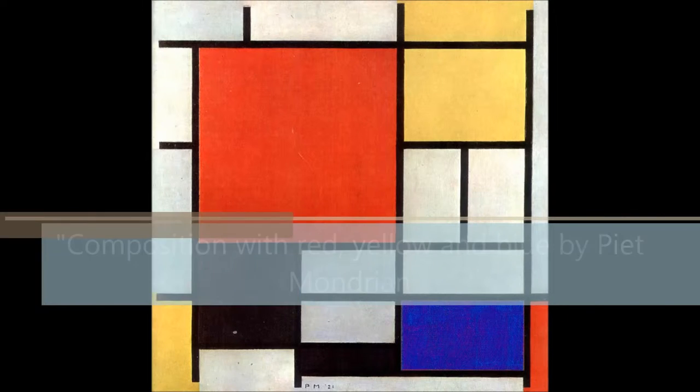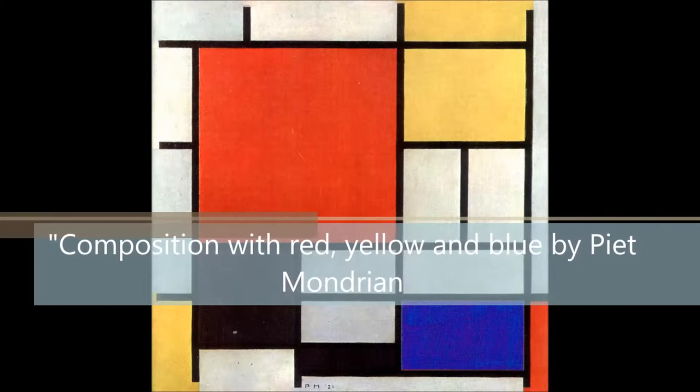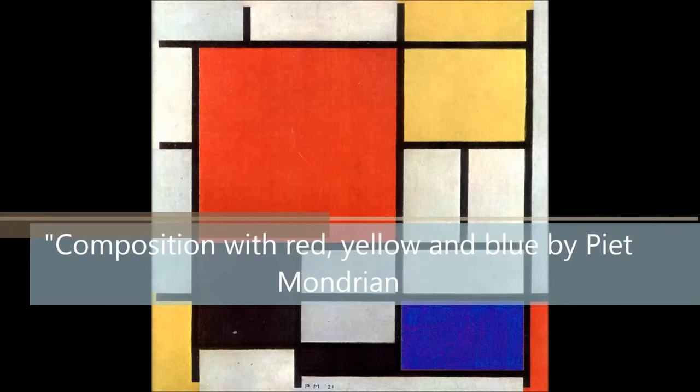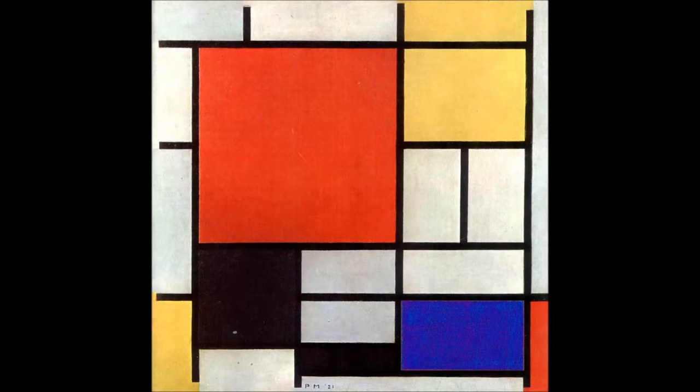Hello, I'm Manuel and I'm going to talk about Composition with Red, Yellow and Blue, a painting by Piet Mondrian.